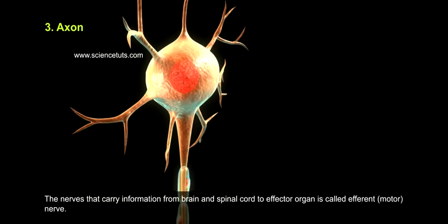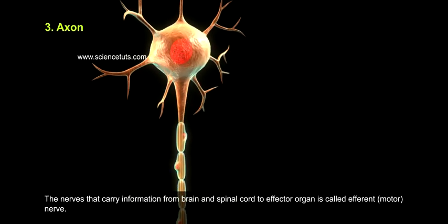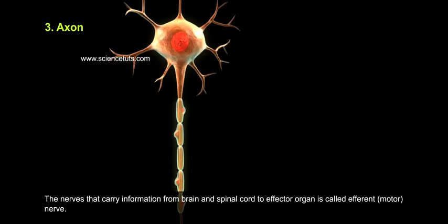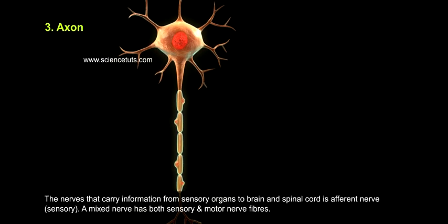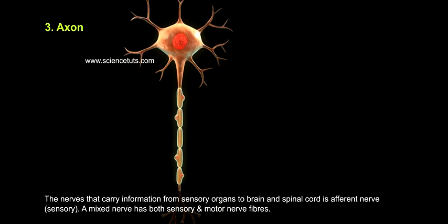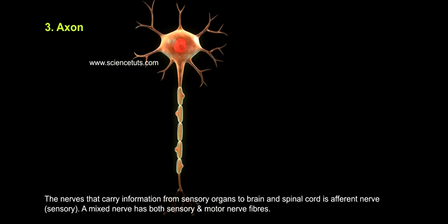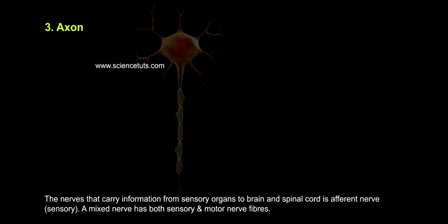The nerves that carry information from the brain and spinal cord to effector organs are called efferent, or motor, nerves. The nerves that carry information from sensory organs to the brain and spinal cord are called afferent, or sensory, nerves. A mixed nerve has both sensory and motor nerve fibers.